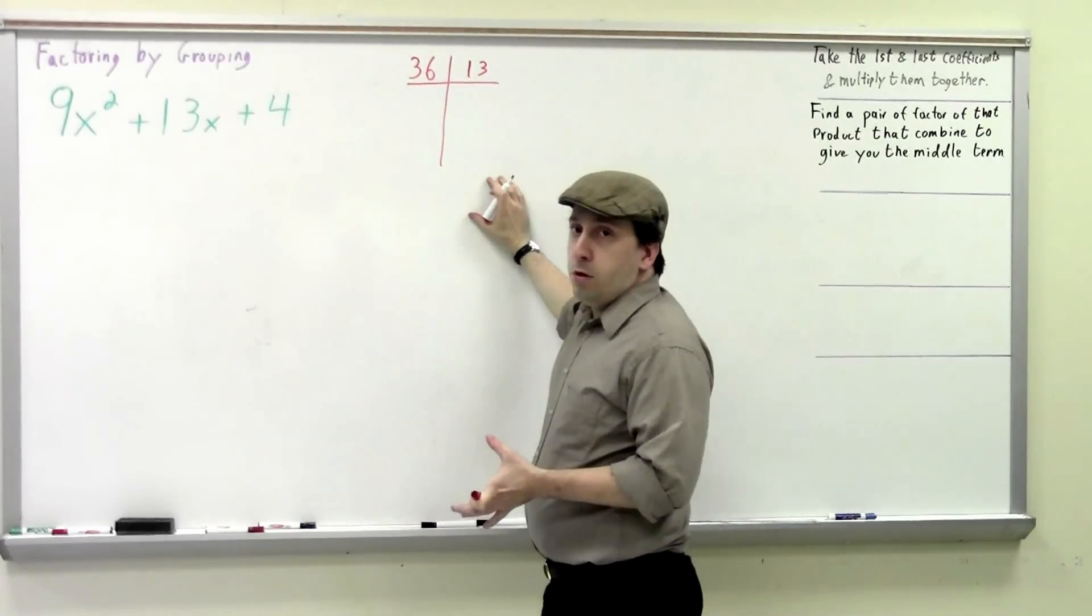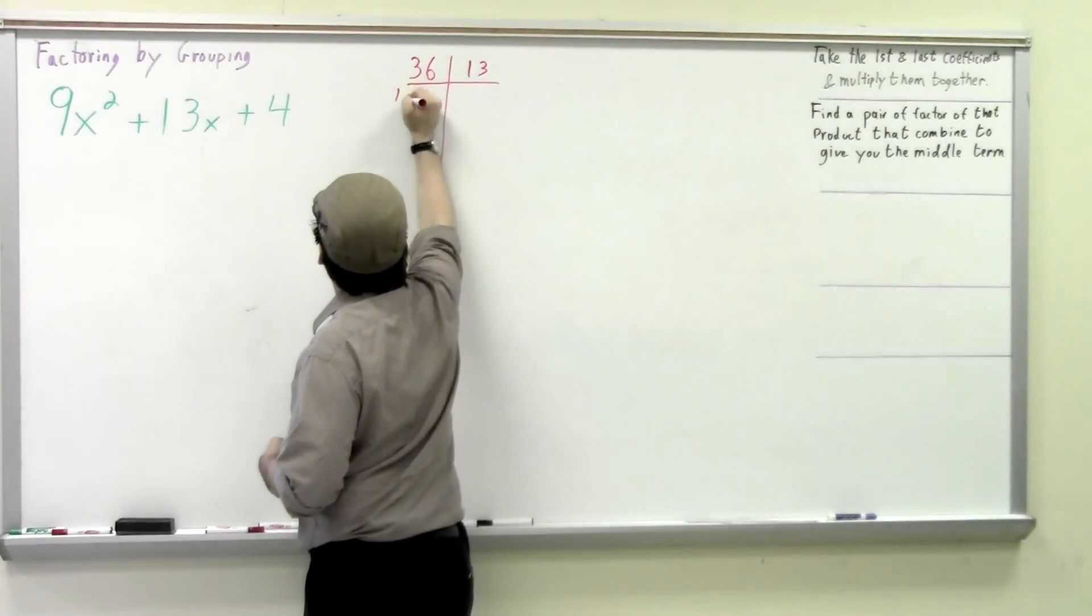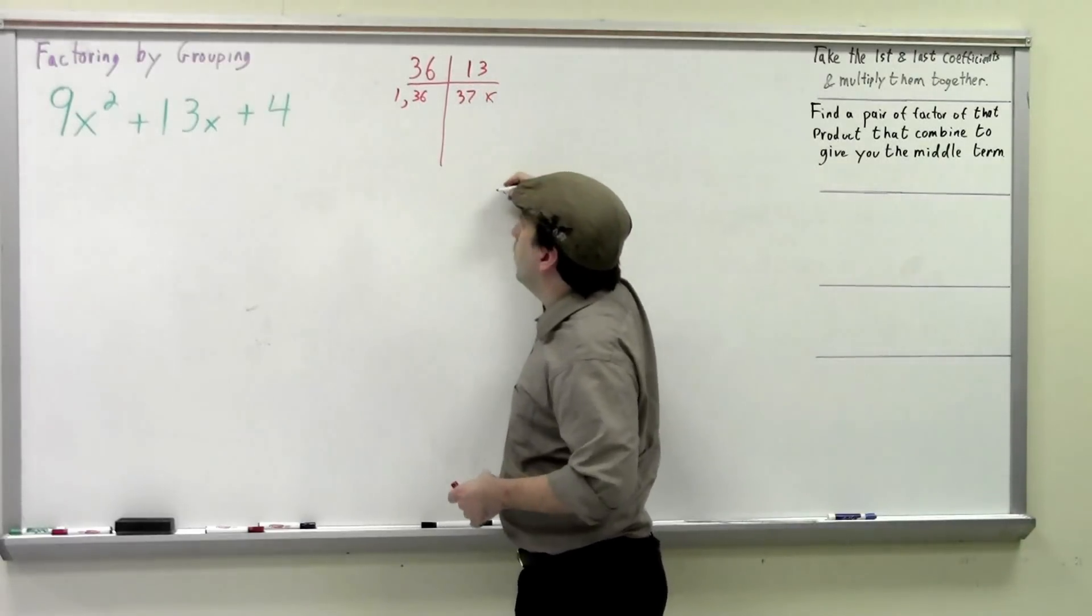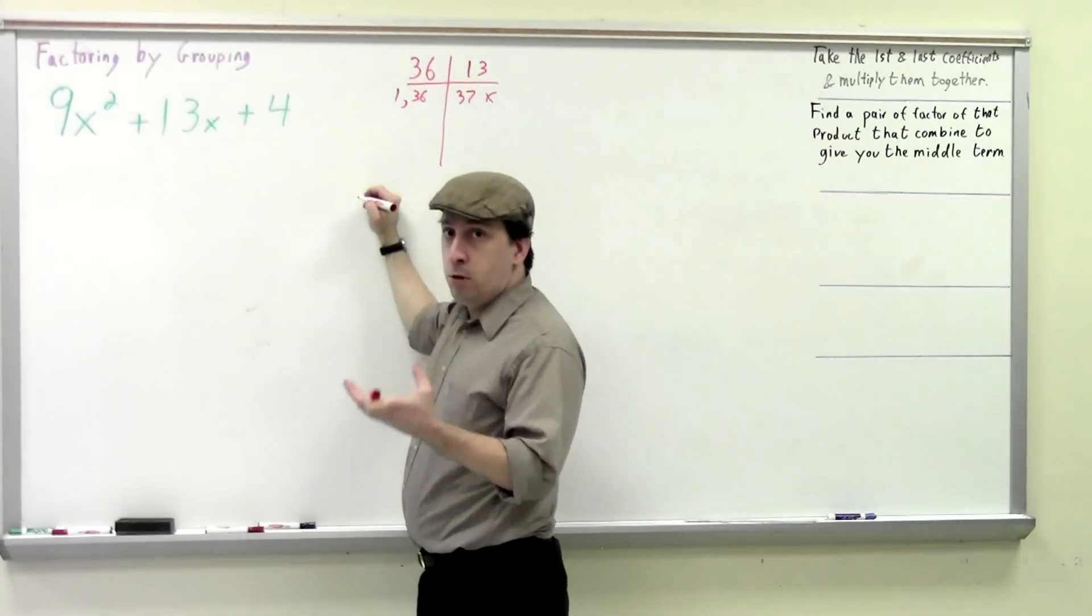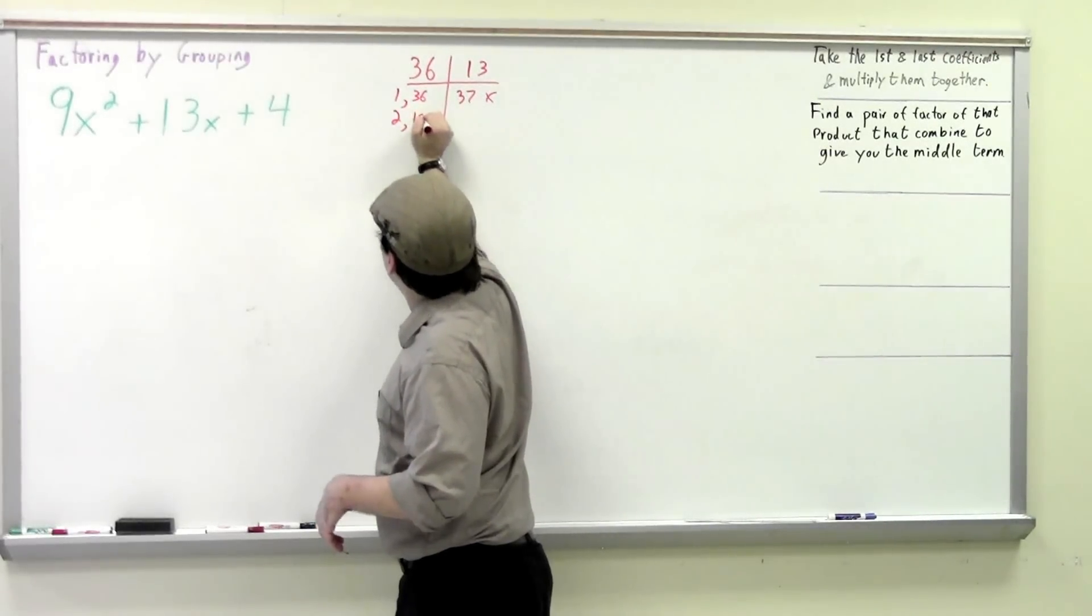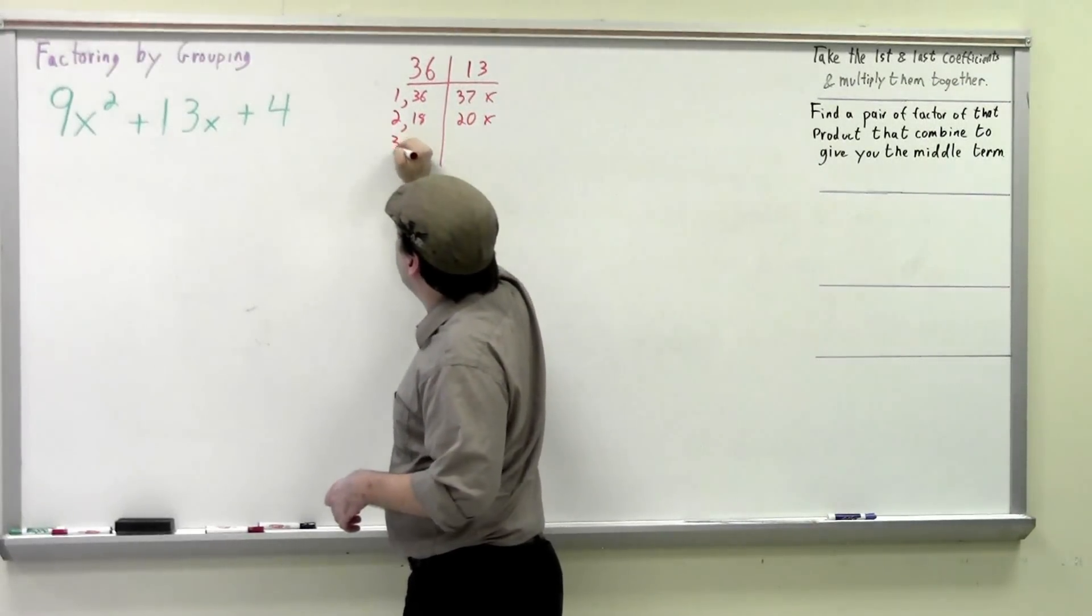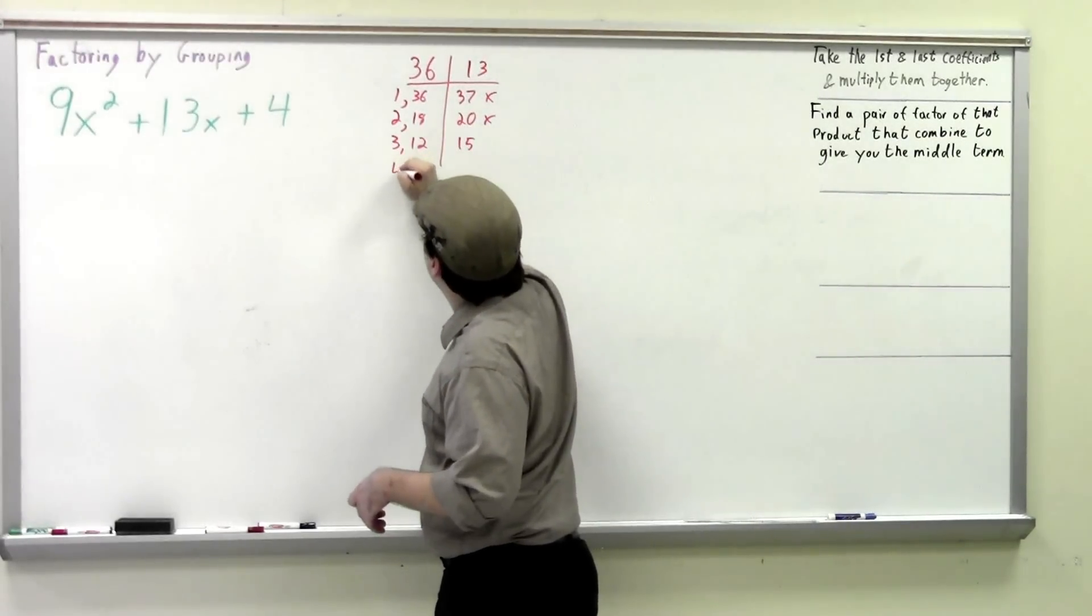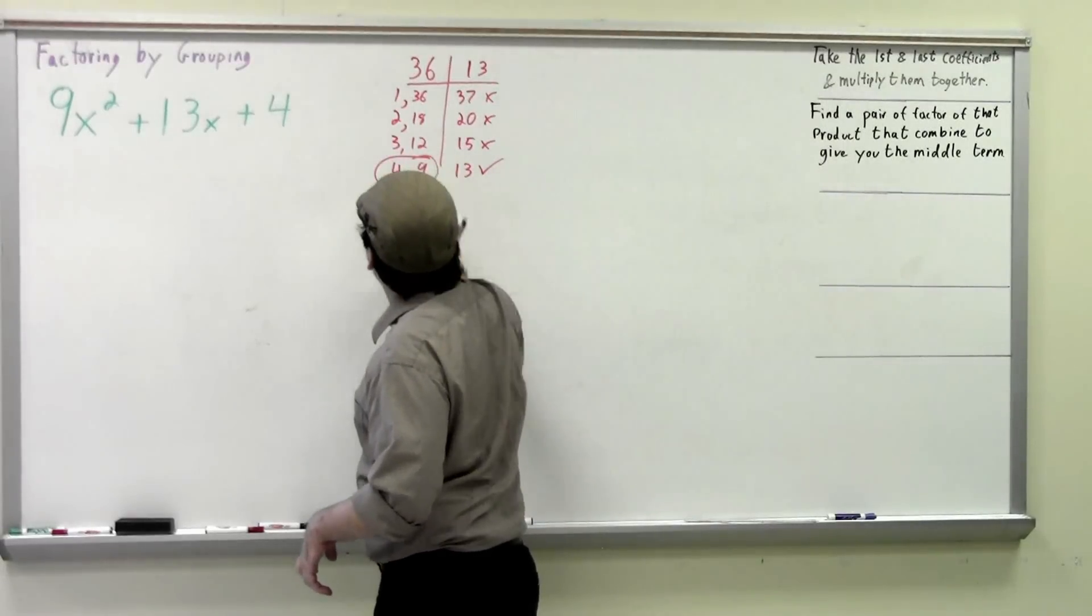What we want to do here is we want to start with 1, because sometimes that works. And we're going to look at what these guys combine to. That's going to give us 37, which is not what we want. The next factor we're going to look at is 2. You just want to work your way up from 1 to 2. It's going to give me 2 and 18, which is 20. I don't want that. Our next will be 3, which will give me 3 and 12, which is 15. Our next one would be 4. It's going to give me 4 and 9, which will give me 13. That's what I want. So those are the two factors that I'm going to use.